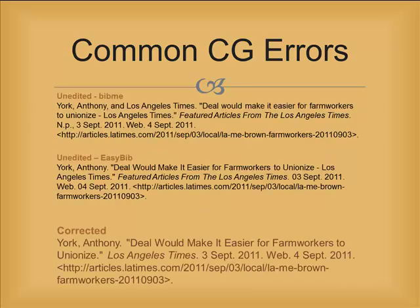There is one other error that happens frequently with CGs that autofill, especially webpages being cited. They tend to pick up extraneous information or incorrect titles, due to the information embedded in the webpage. Take a look at the examples on this slide. The top version is what comes straight from the BibMe citation generator; the second comes straight from EasyBib. The EasyBib version is more correct, but both need to be edited. The corrected version is shown at the bottom.